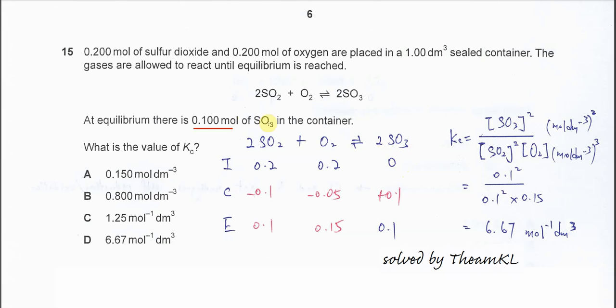At equilibrium 0.1 mol of SO3 formed, meaning it's inside the container. From this information you can get the concentration of the SO2 and O2 at equilibrium.